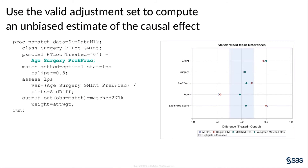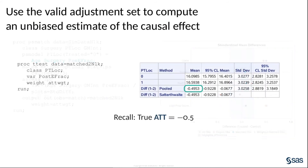This example uses PROC PS MATCH to produce an optimal matching. PROC PS MATCH can produce many different diagnostic plots and tables that you can use to assess the quality of a matching analysis. One of these plots, a standardized mean differences plot, is shown here. You can use the output data set produced by PROC PS MATCH with the t-test procedure to estimate the causal effect. Recall that this is a simulated example, and the true ATT is known to be negative 0.5, so the analysis shown here accurately reproduces the known true value.